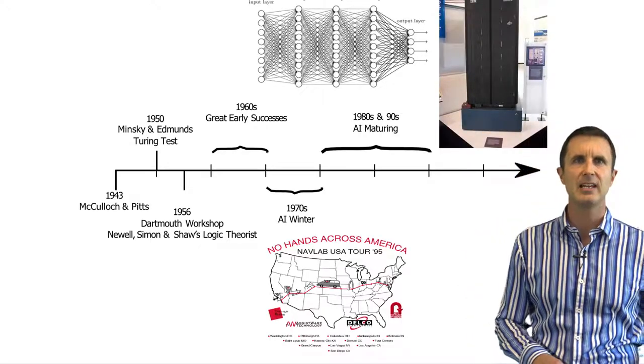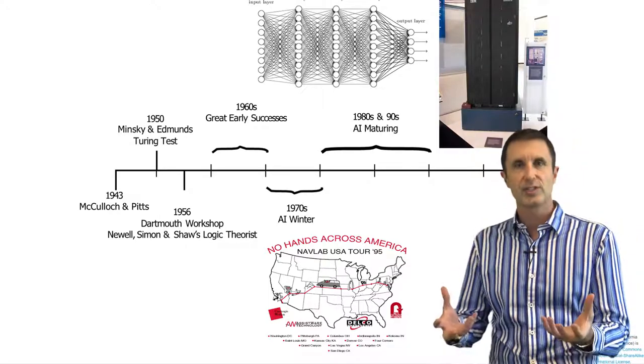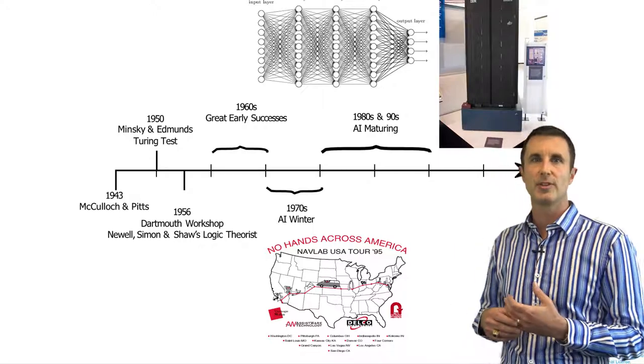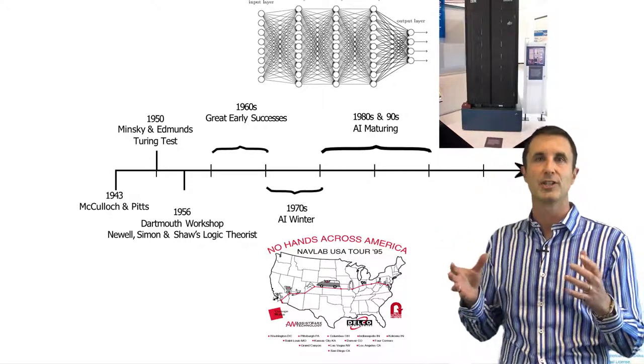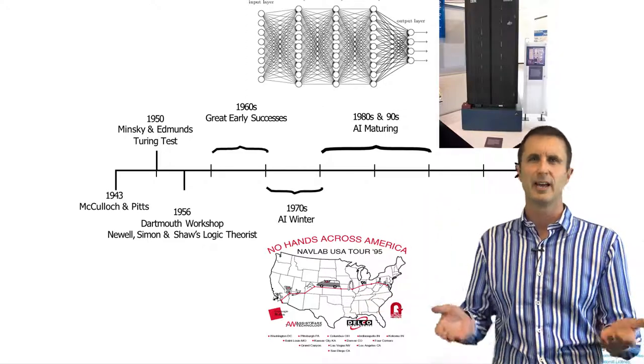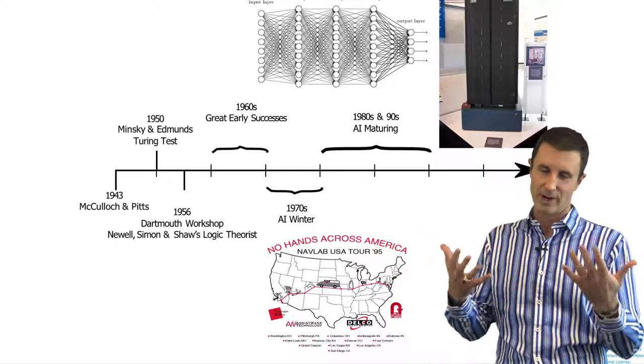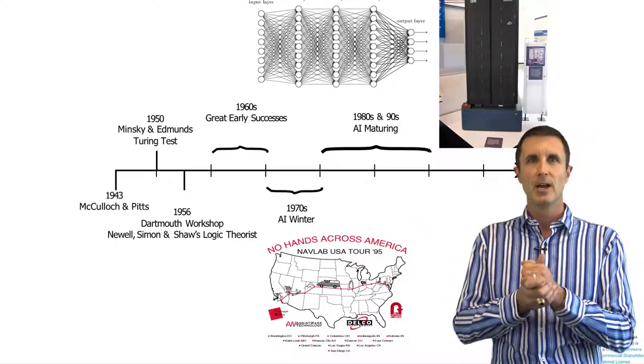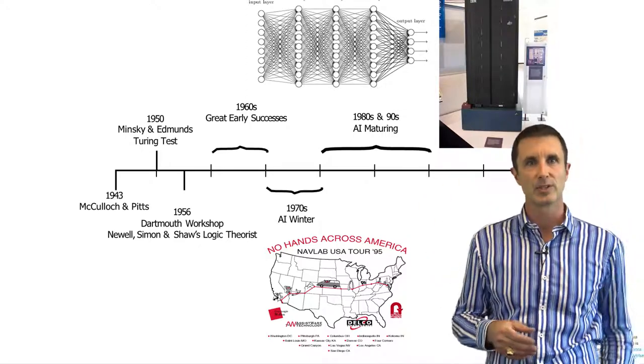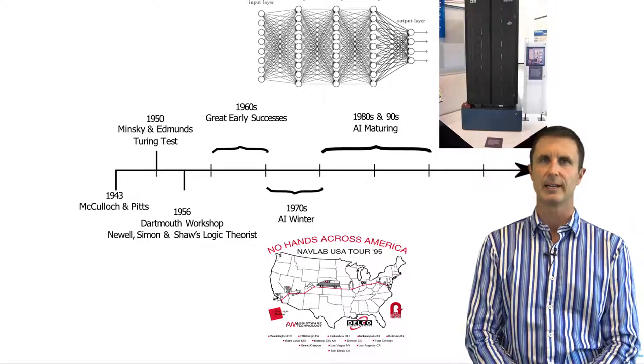In the 1980s and 90s, we saw a resurgence in AI, primarily around neural networks and machine learning. We saw things like the No Hands Across America project, in which a car drove itself from New York to LA and appeared on the Today Show. And neural networks like these, big computers that were designed. This is Deep Blue designed to solve the chess problem and a resurgence in the interest in AI.